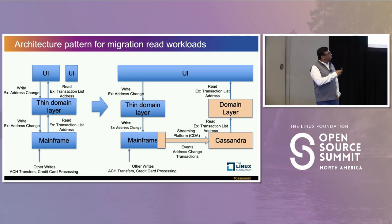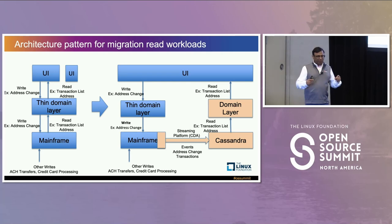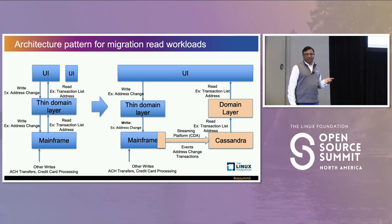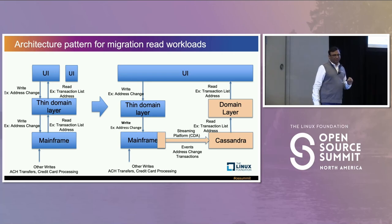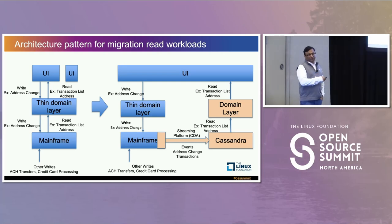One other benefit of moving data away from the mainframe is that the domain layer can be a lot more sophisticated. We enhanced the data — for example, traditionally you'd see very simple transactions, but these days most transactions are enriched: you see the address of where you shopped and the category. We also built voice capability to search transactions, and search capability was built. All those capabilities didn't exist in the previous system. That's the benefit beyond reducing cost — cost was a driver, but not the most important one. Building new capability was the driver.